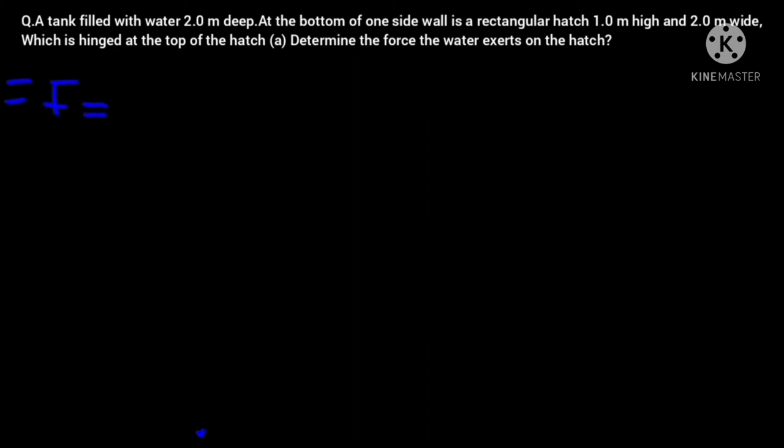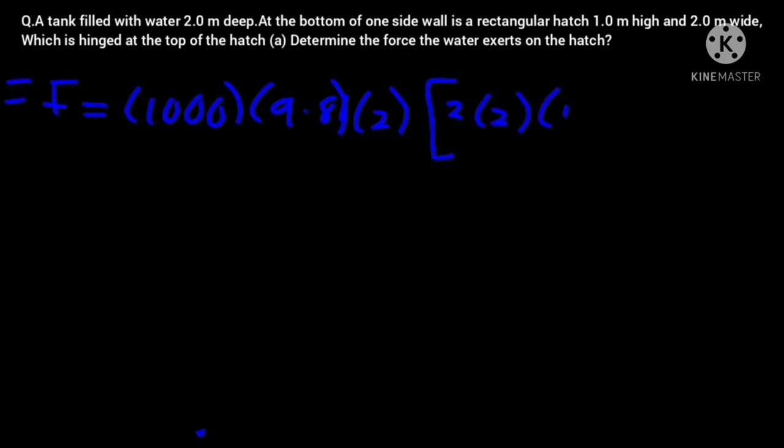So our force is equal to, force is equal to 1000, that's our ρ, that's our density, 1000 times gravitational force 9.8, times the width which is 2 meters, the height of the tank, in brackets, 2 times 2, times 2 minus 1 squared over 2, close brackets.